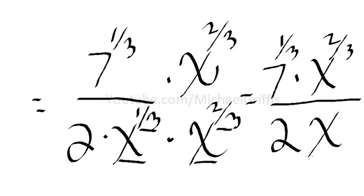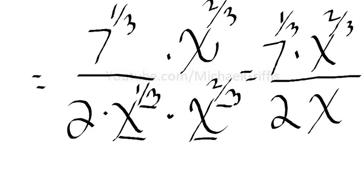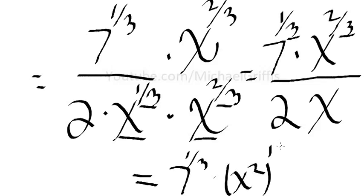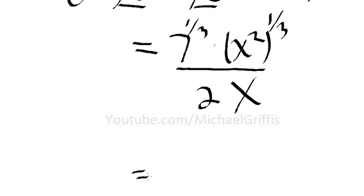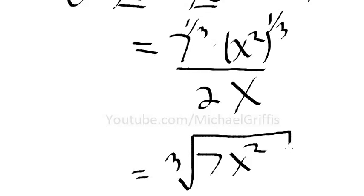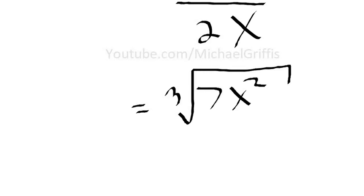Okay, now we got to get this back into radical form because that's where we started. All right, so this is seven to the one-third times X squared, and it's raised to the one-third. All right, so our exponents are the same, and remember it's over two X. So we can rewrite this as seven X squared. We could say three roots, and it's all over two X. Ooh, that was some work.